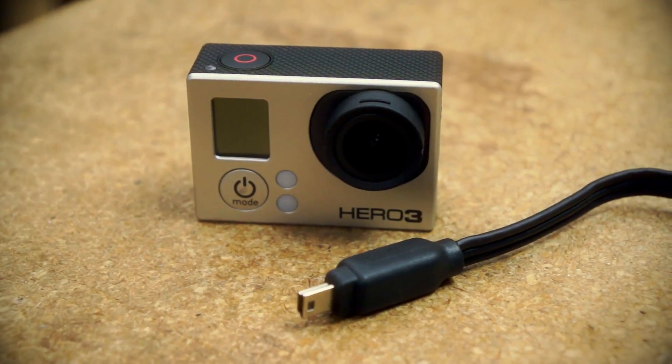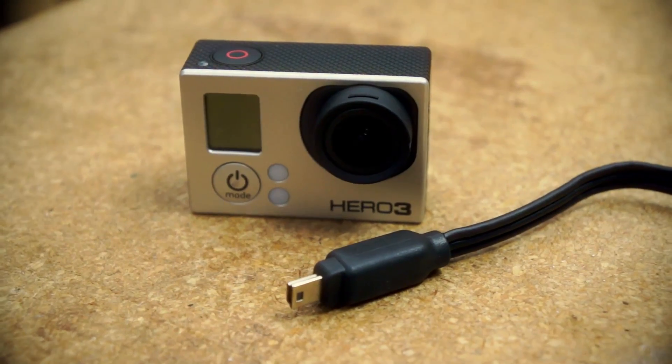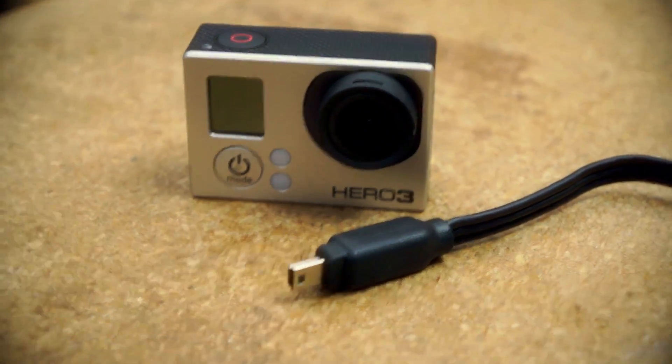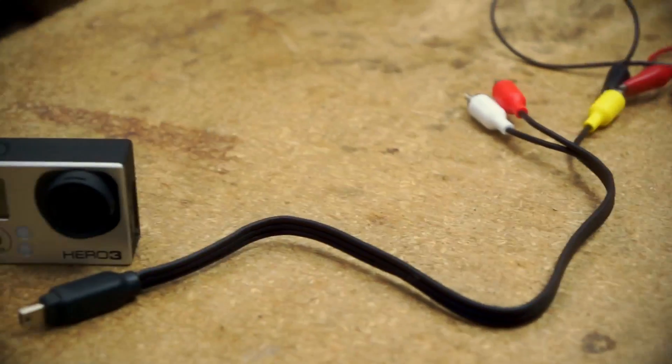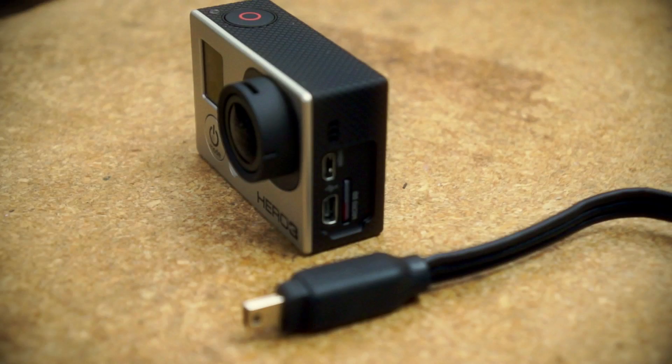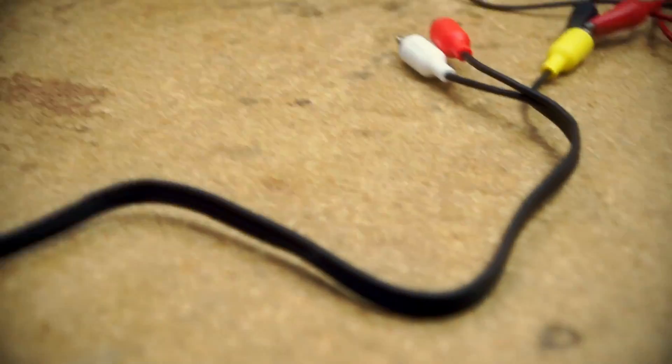Okay, I've got the HERO3 camera here and I would like to use it for FPV. So what I've done is I've bought the component cable that goes into the USB port of the camera, but I need to get it into my transmitter.